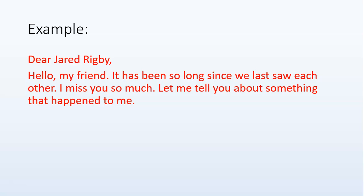Hopefully you've realised that this is a really bad opening to an Exercise 5. Remember, Exercise 5 is you writing to a friend. Would you call your friend their full name, Jared Rigby? Doesn't that sound really weird? You wouldn't go up to your friend in the corridor and call them by their first and second name. It's super formal, and it sounds kind of weird and awkward. Then you're saying 'hello, my friend' — do you ever call your friend 'my friend'? No, because they know they're your friend.